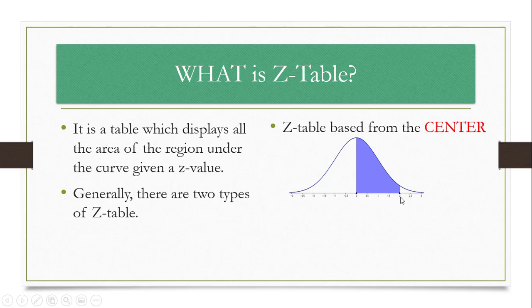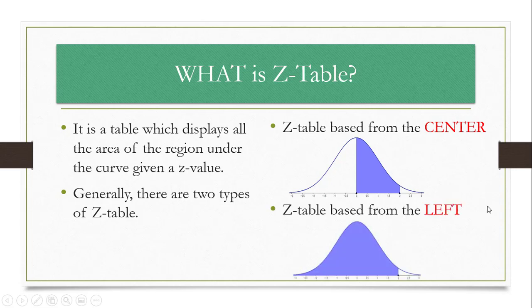Generally, there are two types of Z-Table. The first is the Z-Table based on the center — the area starts from the center to a particular Z value. On the other hand, the second type, or the commonly used Z-Table, is the Z-Table based from the left — it starts from the left to any particular Z value.